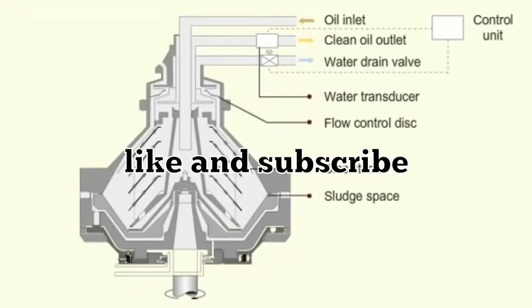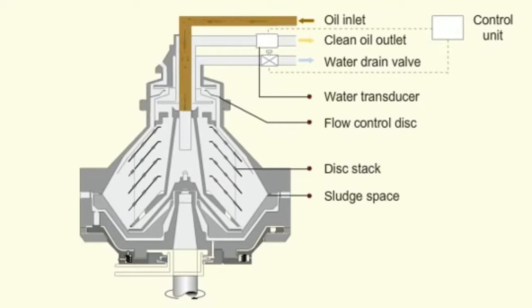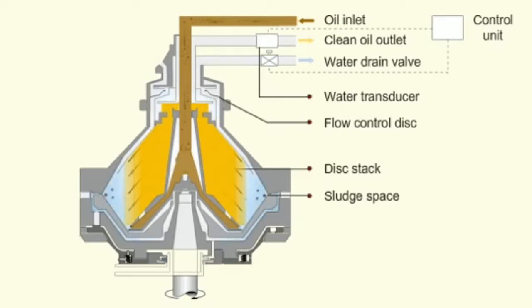Alcap separators are used for purifying fuel oil of specific gravity more than 0.991. When oil is fed into the system through the oil inlet, the separated water and sludge accumulates at the bowl periphery. The purified oil is discharged through the oil outlet.